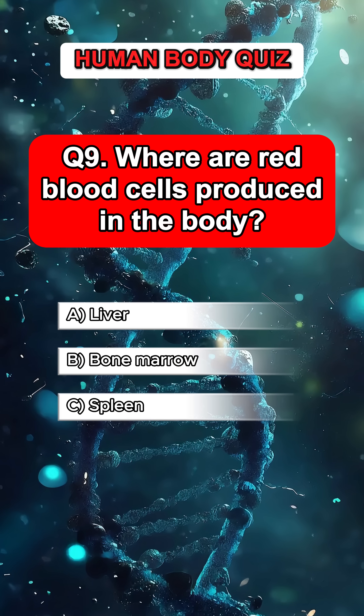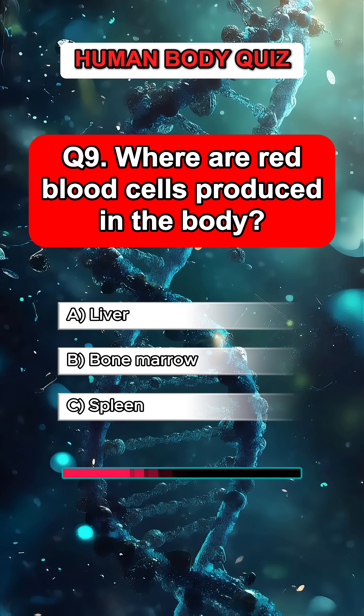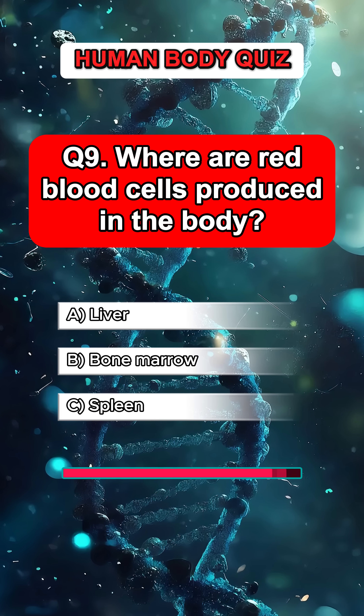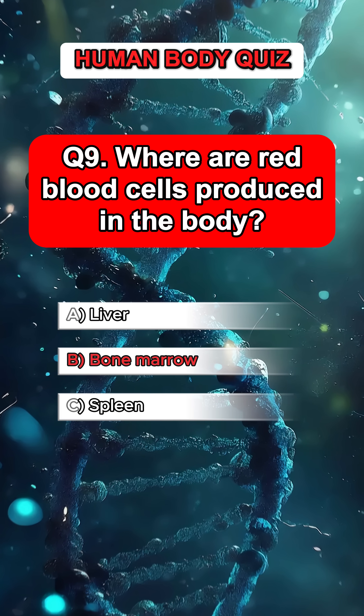Question 9. Where are red blood cells produced in the body? Answer B. Bone marrow.